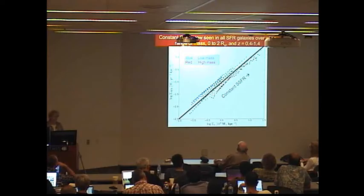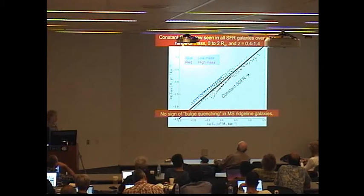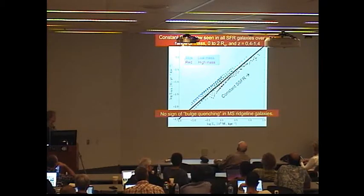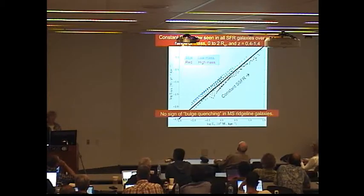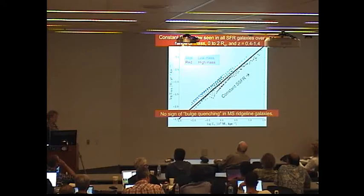So let me close by emphasizing a couple of things. In these data, when you're on the main sequence strongly star forming, there's no sign of bulge quenching in main sequence ridgeline galaxies. But bulges do slow down at some point. And exactly how they do that as part of the fading process is TBD. But you don't see it in this phase of galaxy evolution.